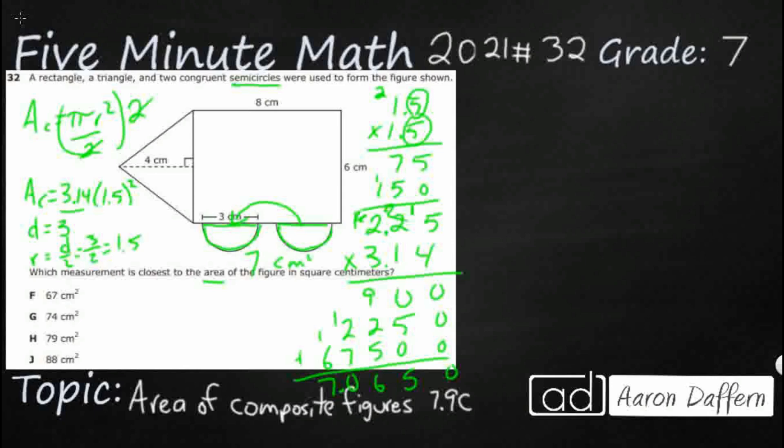This is base times height. So eight times six, that's 48 centimeters squared. And remember the area of a triangle equals one half base times height. So that's one half. My base is this six right here. My height, they give it to me, it's four. So half of six is going to be three times four. So that's 12. So I've got my 12 centimeters squared.